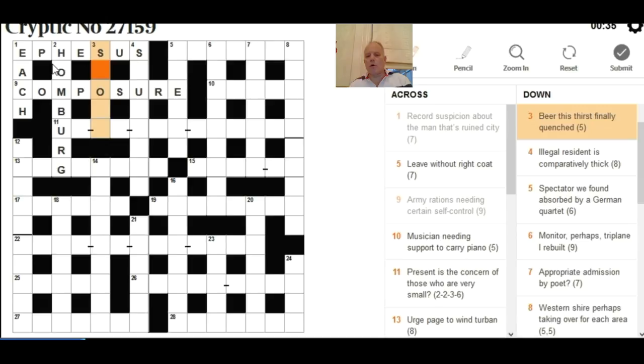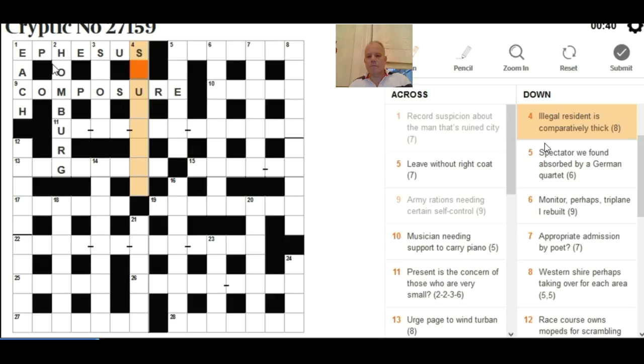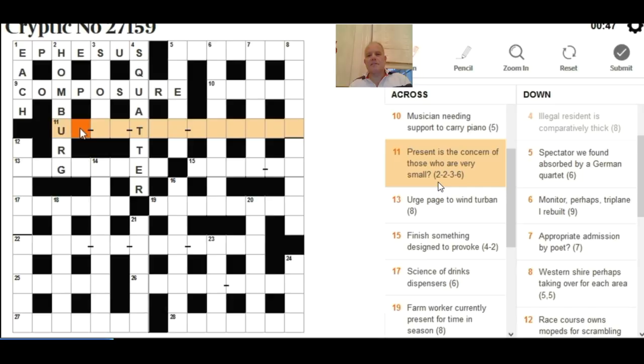Then I moved on to this long phrase: two-hyphen-two-hyphen-three-hyphen-six begins with U. Surely the first word has to be UP. My first thought was UP TO THE MOMENT but here it says 'present' which would fit 'present' as a definition. But 'present' is the concern of those who are very small, and 'moment' is appropriate but MINUTE in its other pronunciation is very appropriate. So the concern of those who are very small is something that is UP TO THE MINUTE, which is quite a nice pun.